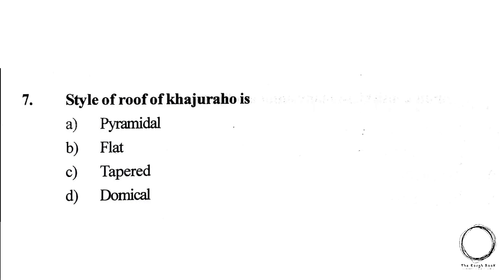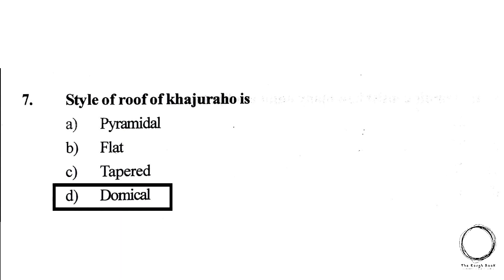Next, the type of roof of Khajuraho is A. Pyramidal, B. Flat, C. Tapered, D. Domical. The right answer is D, Domical.